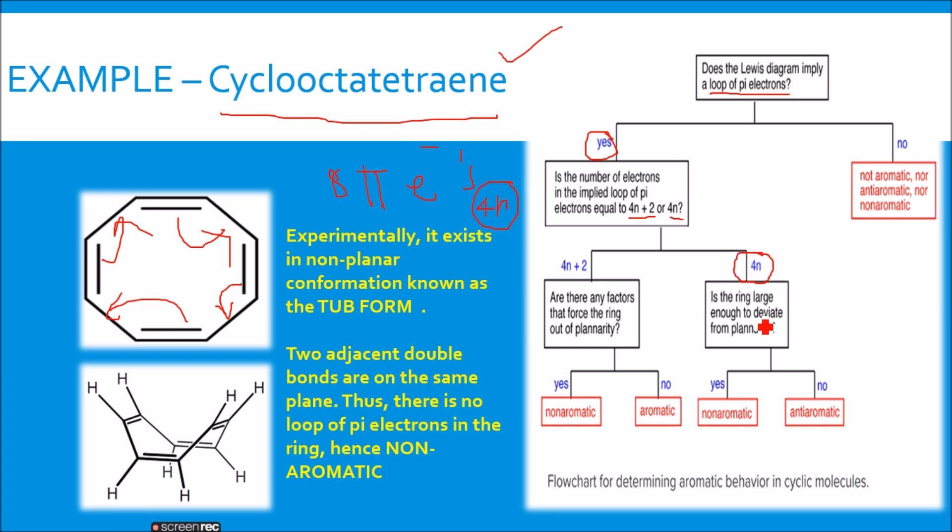Ask the next question: is the ring large enough to deviate from planarity? Yes. The ring is large enough to deviate from planarity. How can you say that? Experimentally, it has been found that cyclooctatetraene, even though if you write it like a planar structure, it is not planar. It is having a non-planar conformation because the ring is large enough to deviate from planarity. Experimentally, it has been found that it has a non-planar conformation. That is, you can call it as a tub form. The ring is large enough, so it deviates from planarity. Yes, the answer is yes. It deviates from planarity and the molecule is non-aromatic.